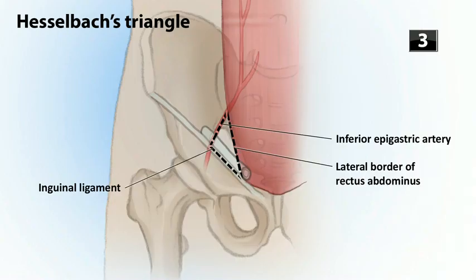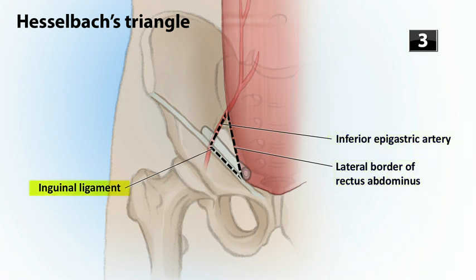What structures form Hesselbach's triangle? Imagine that triangle pointing down toward the groin. The top is the inferior epigastric artery, the medial border is the rectus abdominis muscle, and the lateral border is the inguinal ligament. That's it for the warm-up — let's get to the lecture.